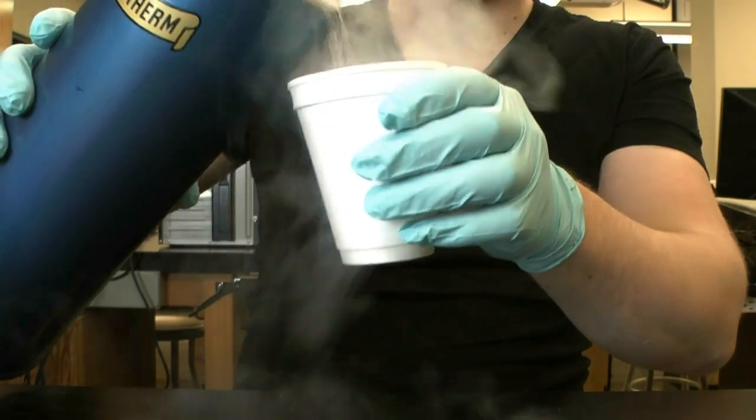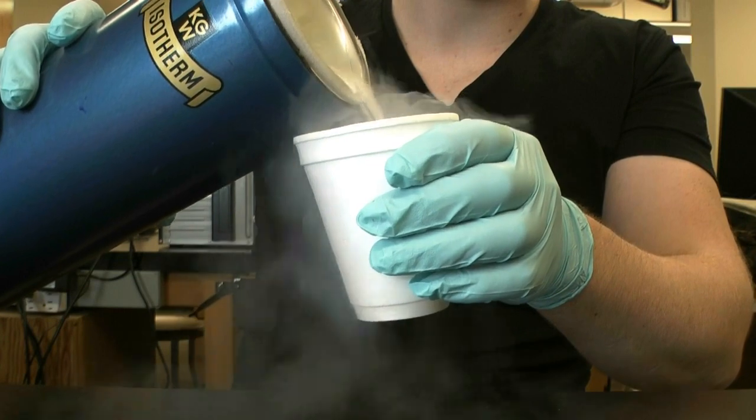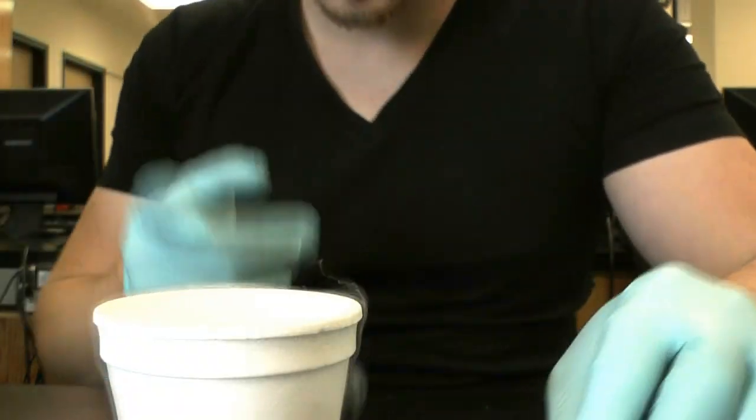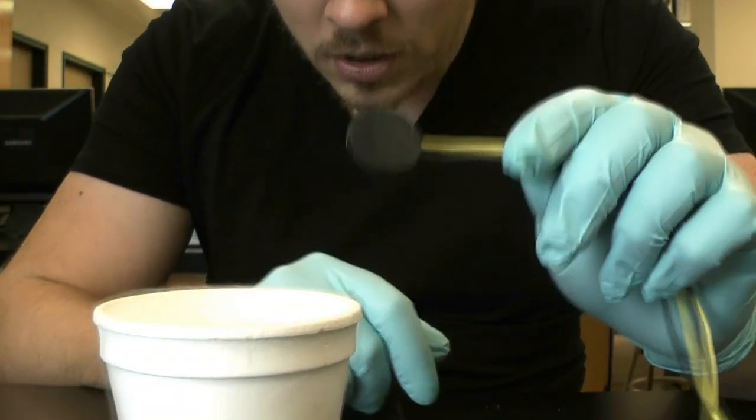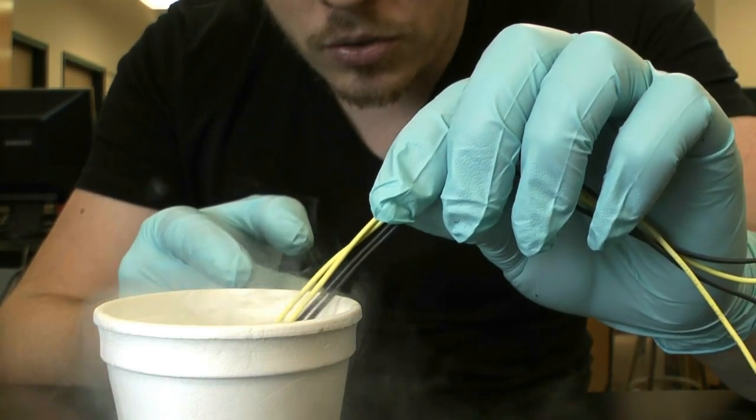Superconductors are materials with very little resistance to the flow of electrical current. All known examples of these materials have to be cooled well below freezing to work. Thus, the liquid nitrogen. Now, you see it starts to boil as it's cooling it down.